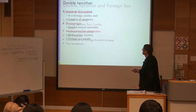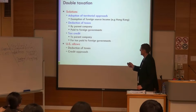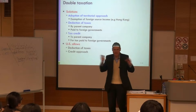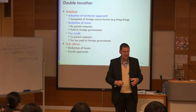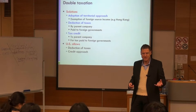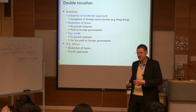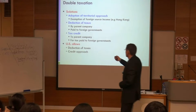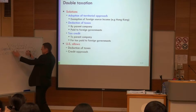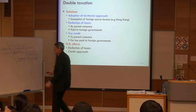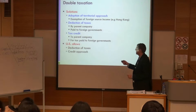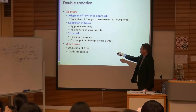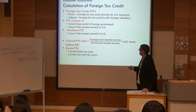One solution is a territorial approach. Hong Kong is a perfect example — they don't count overseas income in your Hong Kong tax, so you don't need to worry about tax paid overseas. But countries like the US use a residency or citizenship-based approach with a broader net, so you need more tax credits or deductions. The US allows either a deduction of taxes paid or a tax credit approach.